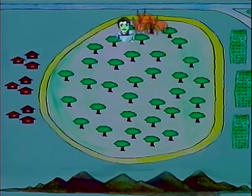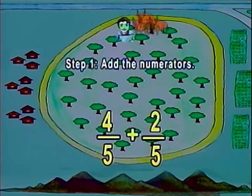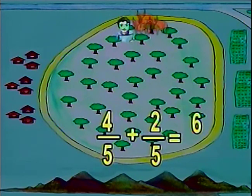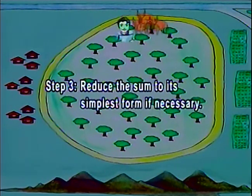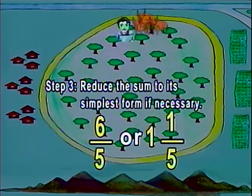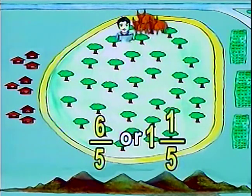On the second route, the given fractions are 4 fifths and 2 fifths. Add the numerators: 4 plus 2 equals 6, over the common denominator 5. Don't forget to reduce the sum if necessary. 6 fifths can be reduced into 1 and 1 fifths.